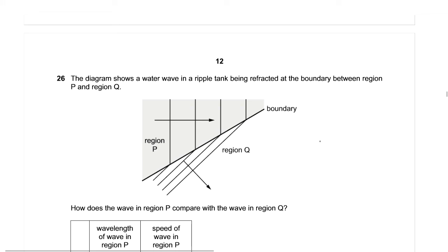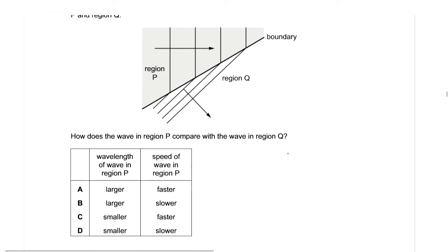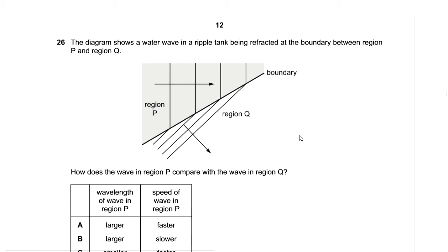Our next question is question number 26 from May/June 17, variant 2. The diagram shows a water wave in a ripple tank being refracted at the boundary between region P and region Q. How does the wave in region P compare with the wave in region Q in terms of wavelength and speed? Looking at the wave fronts, the distance between two consecutive wave fronts is the wavelength. It is clear that in region P the wavelength is greater than in region Q, so options C and D are eliminated.